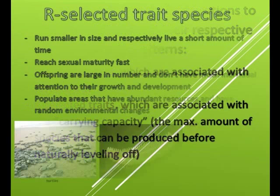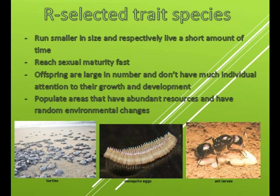R-selected trait species run smaller in size and respectively live a short amount of time, reach sexual maturity fast, have a large number of offspring with not much individual attention to their growth and development, and populate areas that have abundant resources and random environmental changes.